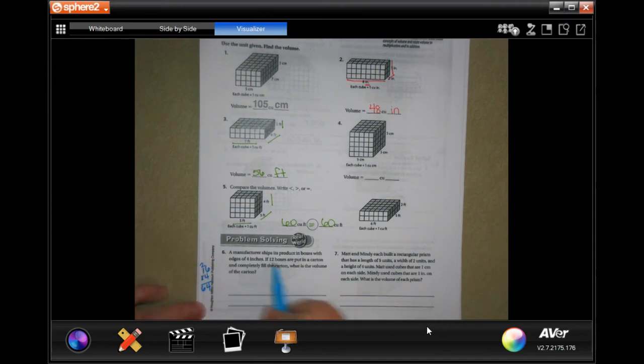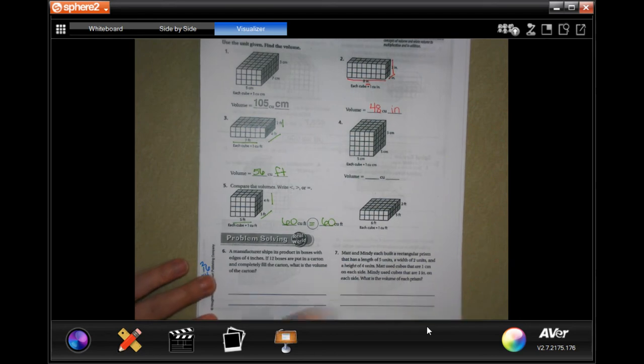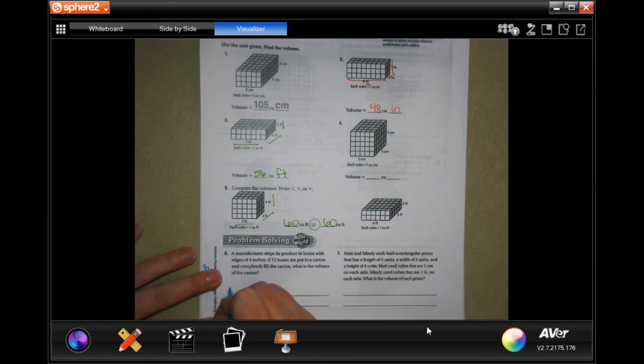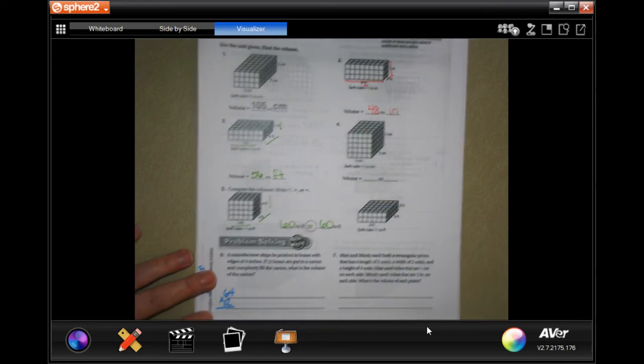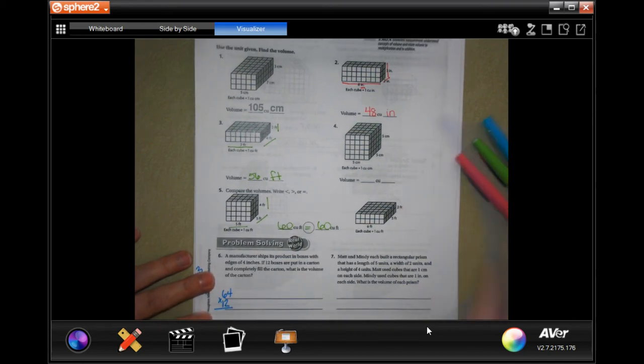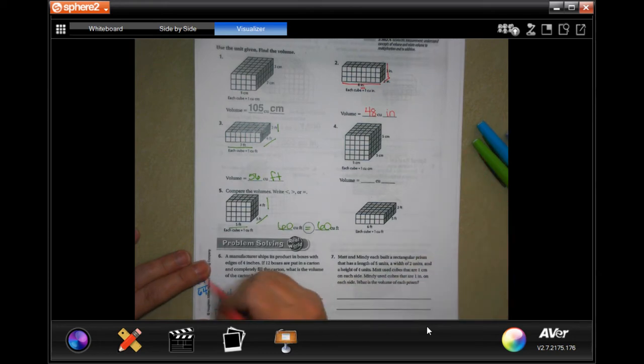We're doing 64 times 12. So 2 times 4 is 8, 2 times 6 is 12. Put a 0 back there, and then 1 times 64, add them up.